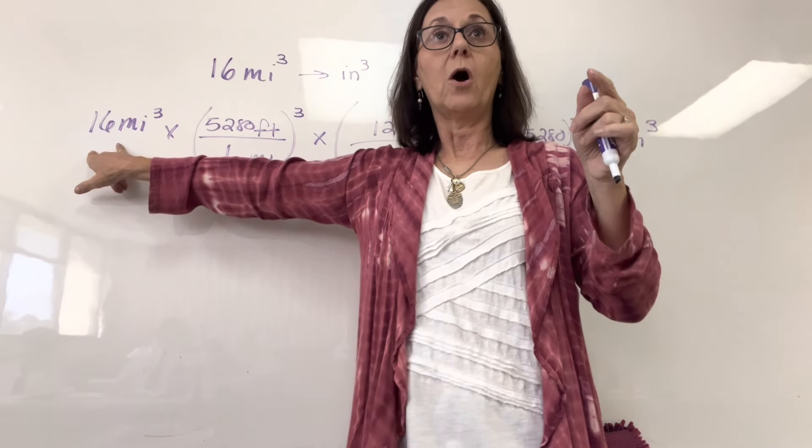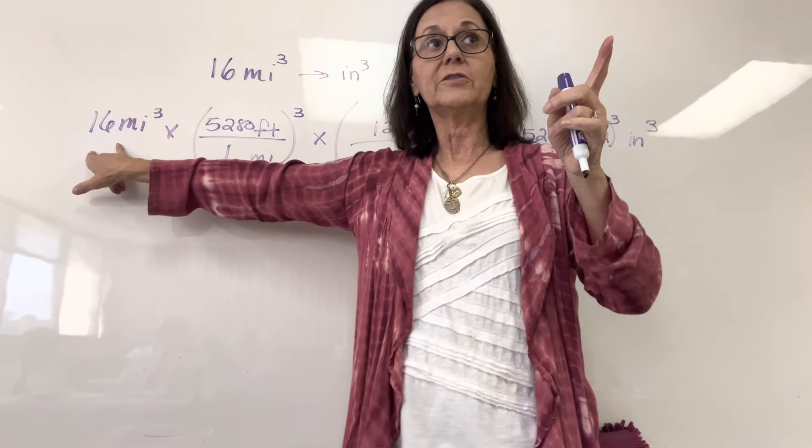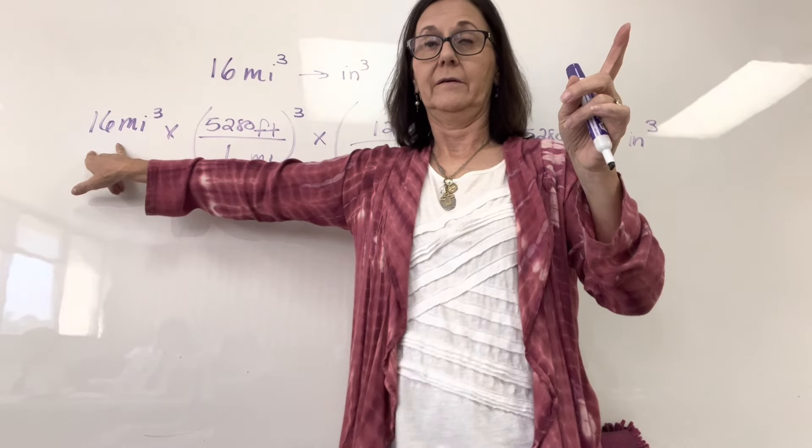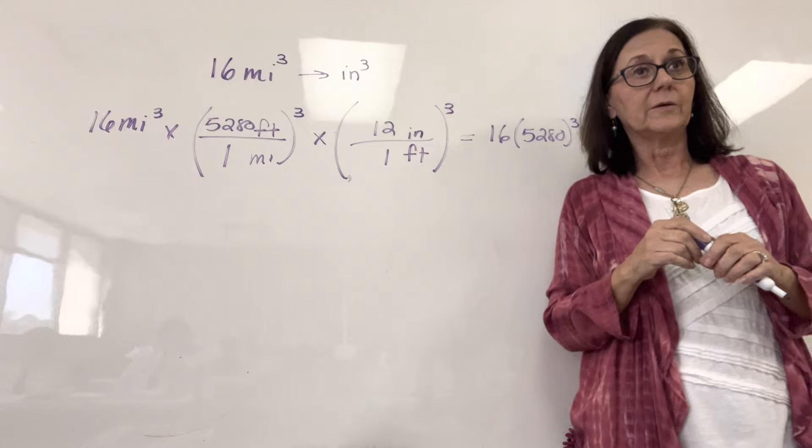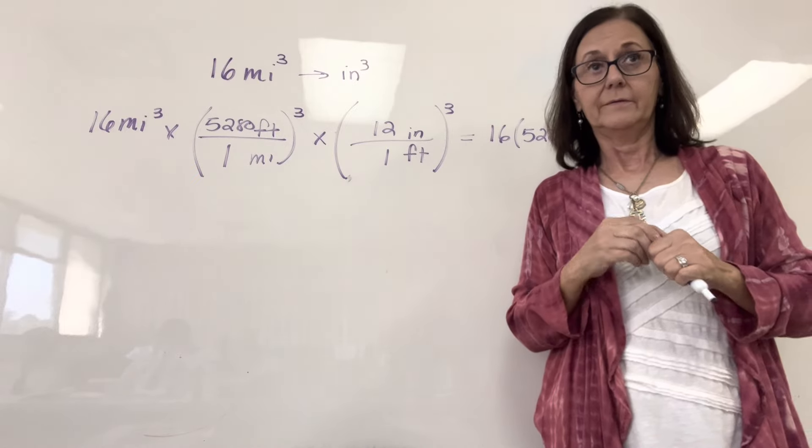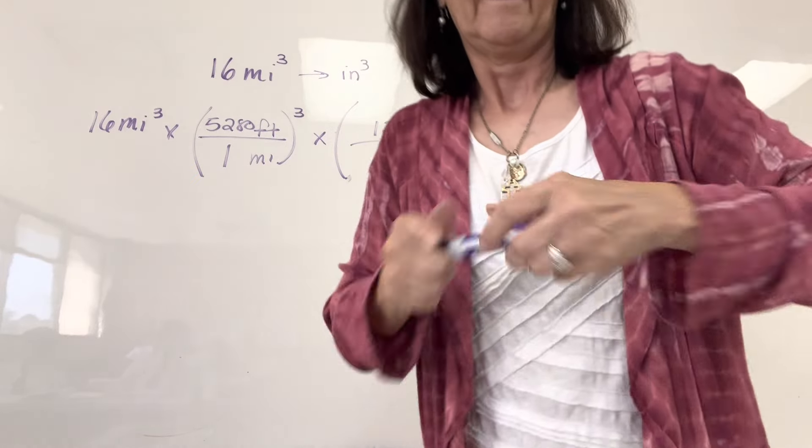Okay. Don't cube the first thing, what you're converting. Only cube or square your multipliers. Got it? All right.